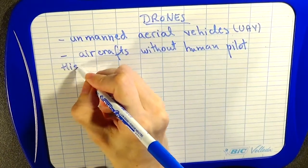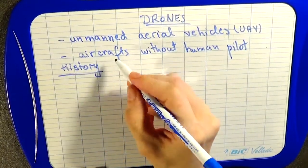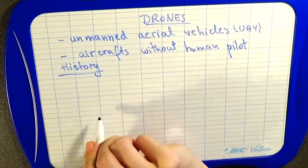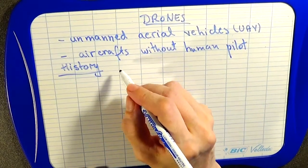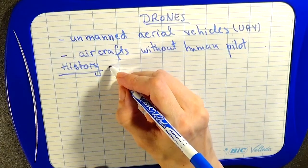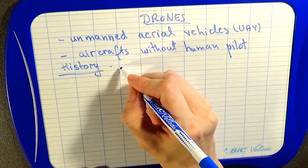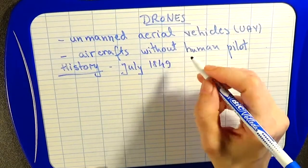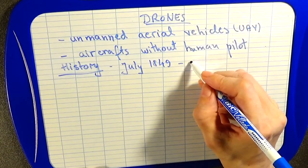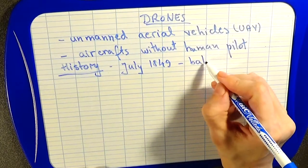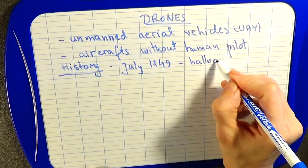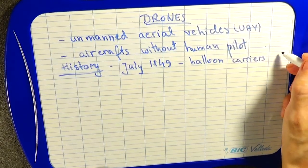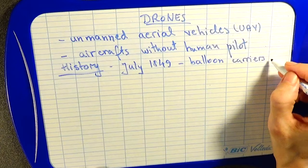Let's learn something about the history of the drones. The earliest recorded unmanned aerial vehicles were recorded in July 1849, when balloon carriers were used.